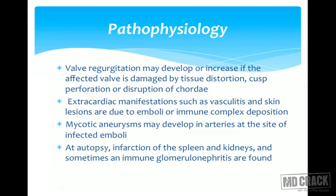Extracardiac manifestations such as vasculitis and skin lesions are due to emboli or immune complex deposition. Mycotic aneurysms may develop in the arteries at the site of infected emboli. At autopsy, infarction of the spleen and kidneys and sometimes immune glomerulonephritis can be found.